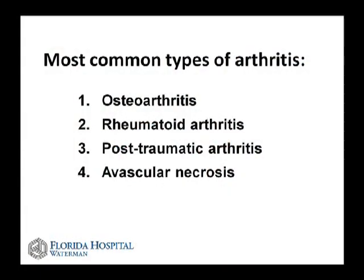Post-traumatic arthritis is a result of an injury — for example, someone suffered a fracture into the knee joint, hip joint, or pelvis from a car accident, and that leads to arthritis in the future. Avascular necrosis is a condition where the blood supply to the joint is destroyed, typically seen in alcoholics or scuba divers, and sometimes it happens for no reason, called idiopathic arthritis. All of these conditions can be treated to relieve pain.